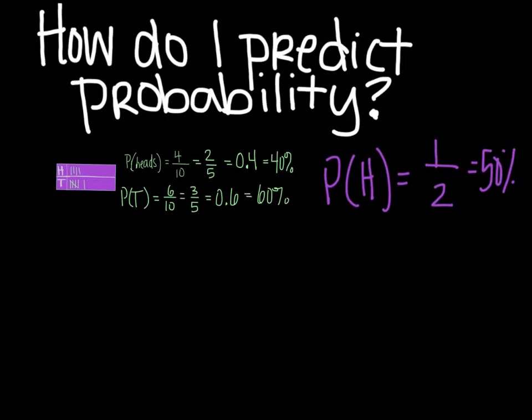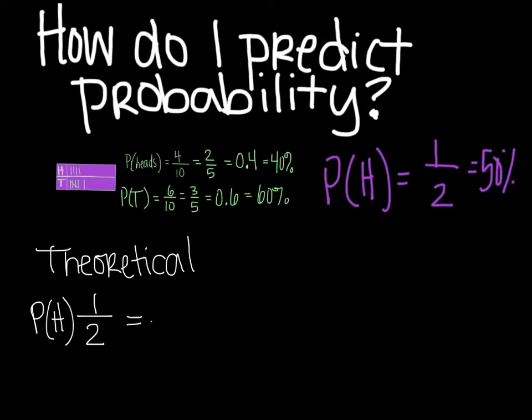So I'm going to use the theoretical first. Using the theoretical probability, that's one out of two. Now that, and we'll talk about the probability for heads, one out of two. If, let's say, I tossed that coin ten times.